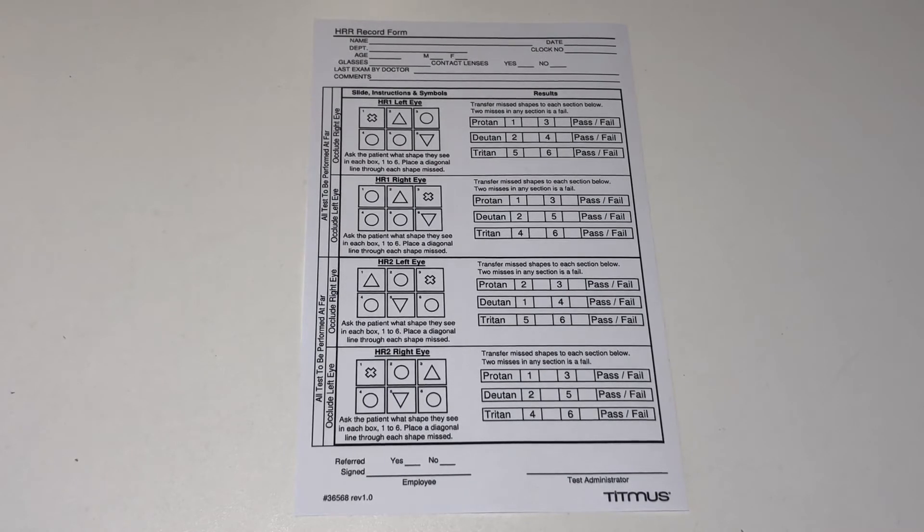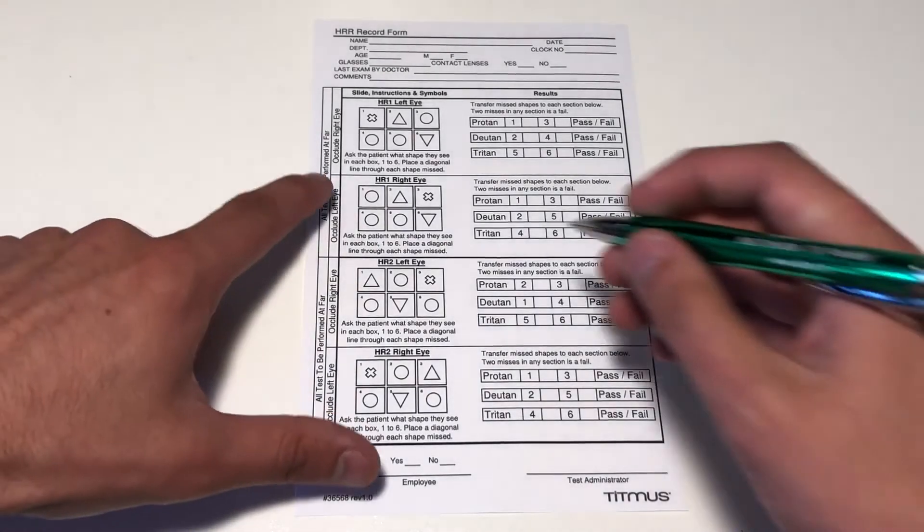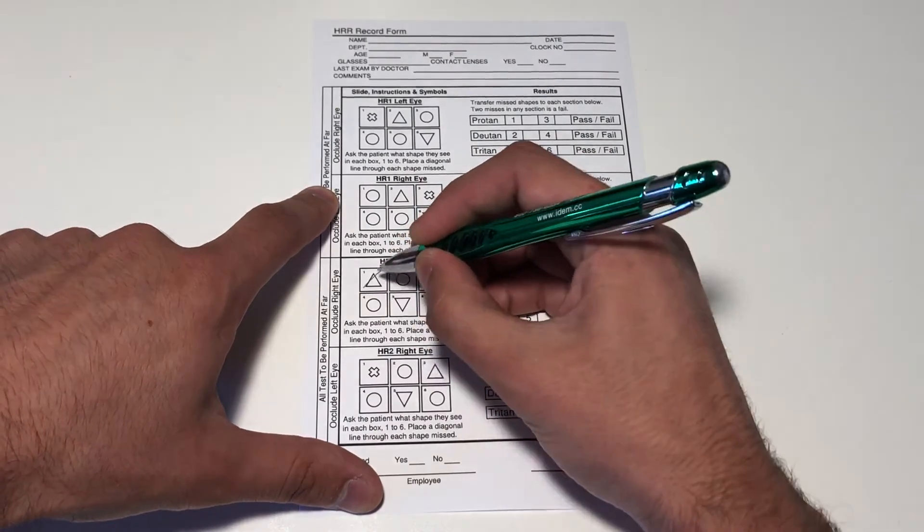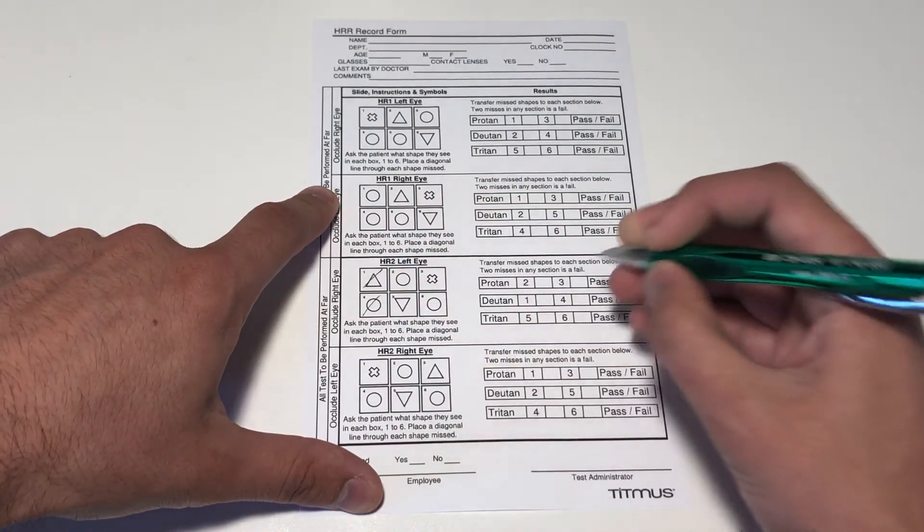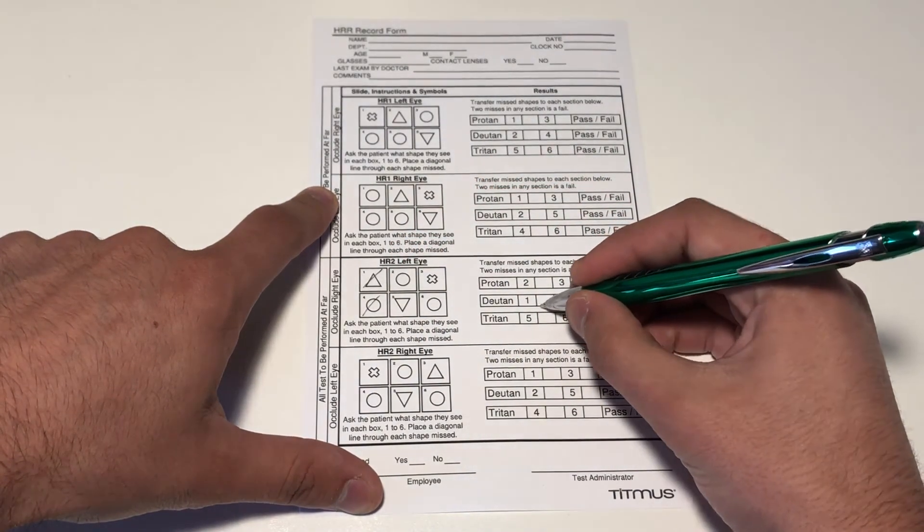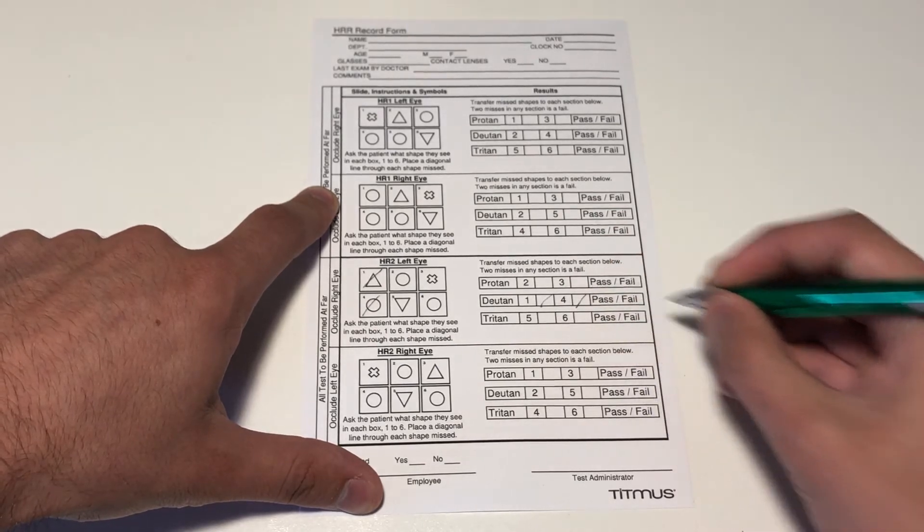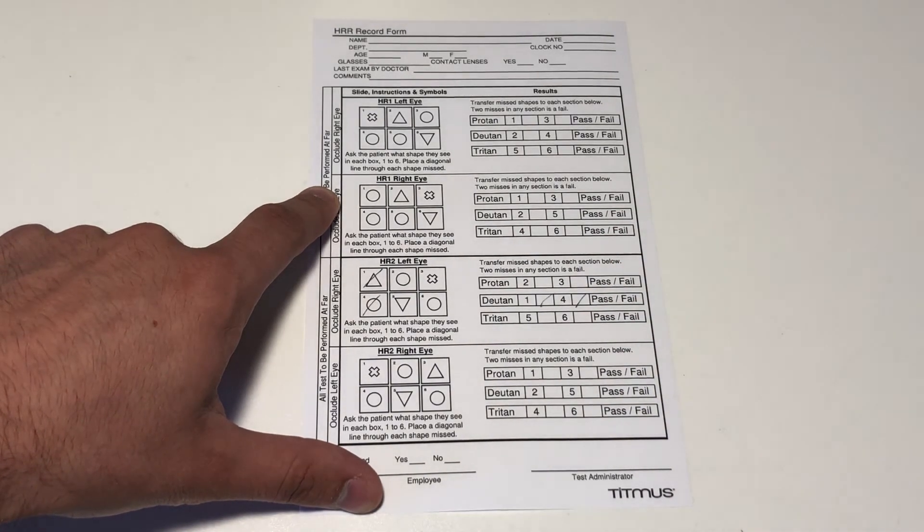In order to pass, the patient must not misidentify any two shapes from the same section. For example, in this slide, if the patient misses shape one, a triangle, and shape four, a circle, the patient may be afflicted with Duton color blindness and cannot be passed.